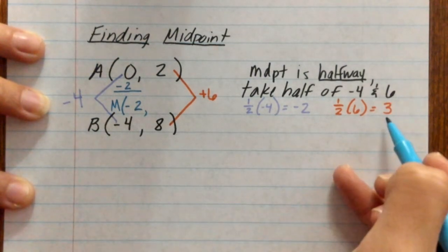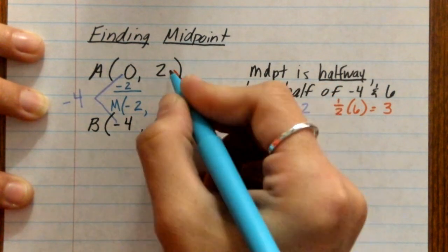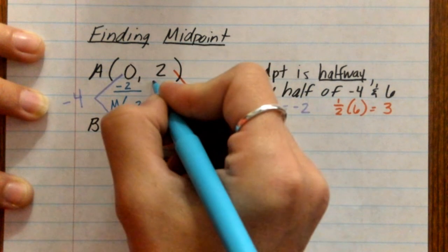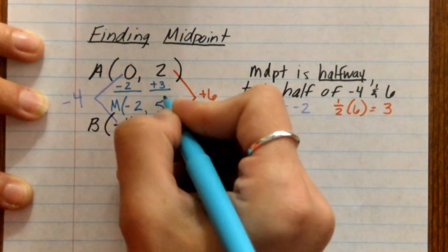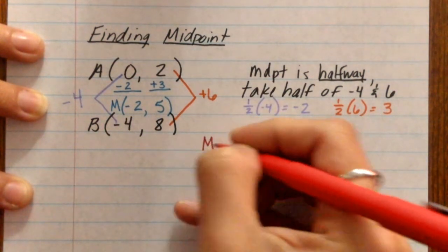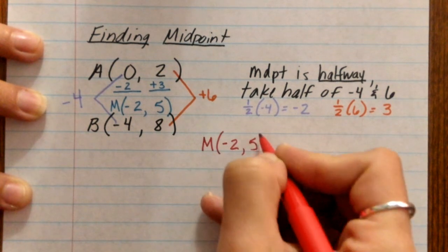Then, we take our positive 3 and our y, which means add 3. So it's halfway. If the total distance is 6, we only want to go halfway of 3. So we're only going to add 3 and we wind up with 5. So your official answer for the coordinates of your midpoint is going to be that negative 2, positive 5.